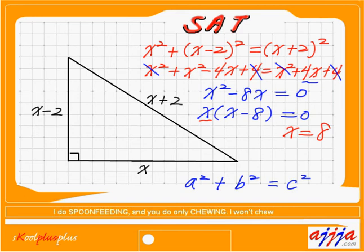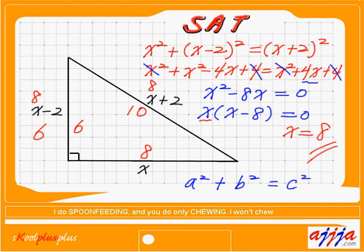All I have to do now is check. With x equals 8: 8 minus 2 is 6, and 8 plus 2 is 10. So the sides are 6, 8, and 10 — that's a 3-4-5 triangle. Fantastic! So the x value was 8.